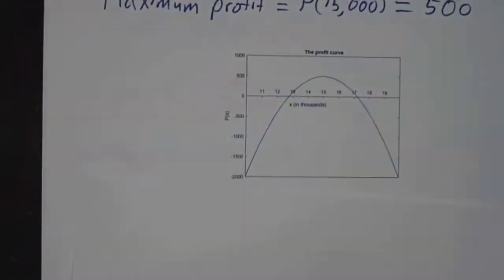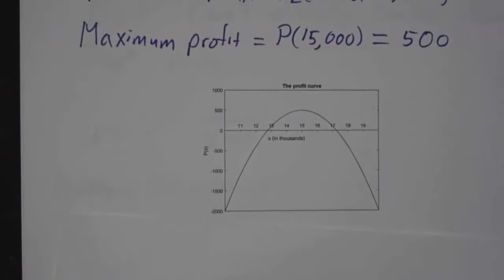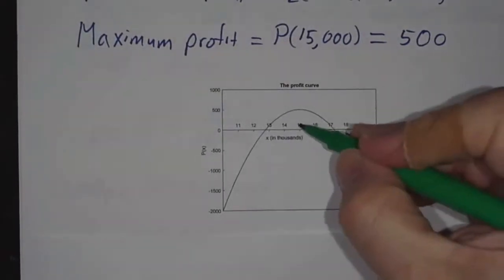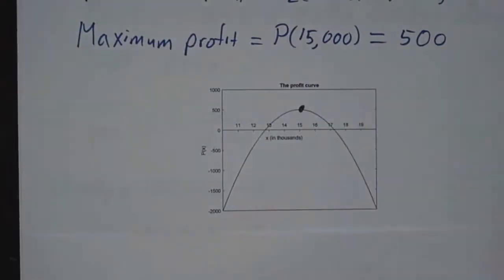So in fact, here is a graph of the profit function, and you see that the profit is maximized at 15,000.